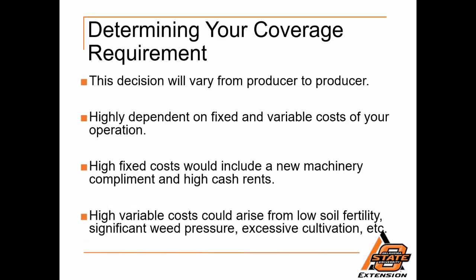Determining your coverage requirement — this decision will vary from producer to producer and is highly dependent on the fixed and variable costs of the operation. We'll go through an example later in this presentation. High fixed costs would include a new machinery complement and high cash rents, and high variable costs would arise from low soil fertility, significant weed pressure, excessive cultivation, and other things that would cause a producer to have a high cost of production on their land.